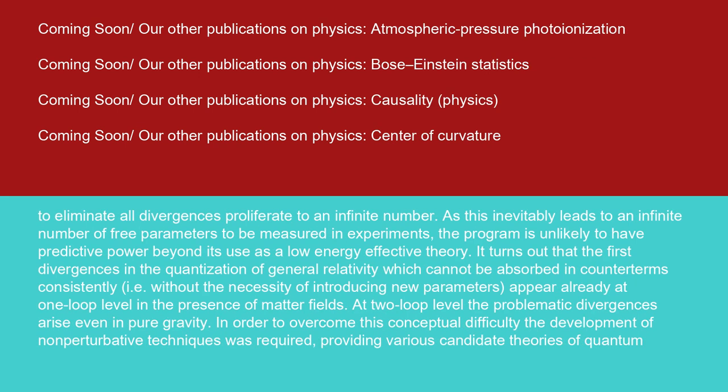Applying this method to gravity, however, the counterterms required to eliminate all divergences proliferate to an infinite number. As this inevitably leads to an infinite number of free parameters to be measured in experiments, the program is unlikely to have predictive power beyond its use as a low-energy effective theory. It turns out that the first divergences in the quantization of general relativity which cannot be absorbed in counterterms consistently, i.e., without the necessity of introducing new parameters, appear already at one-loop level in the presence of matter fields. At two-loop level, the problematic divergences arise even in pure gravity.